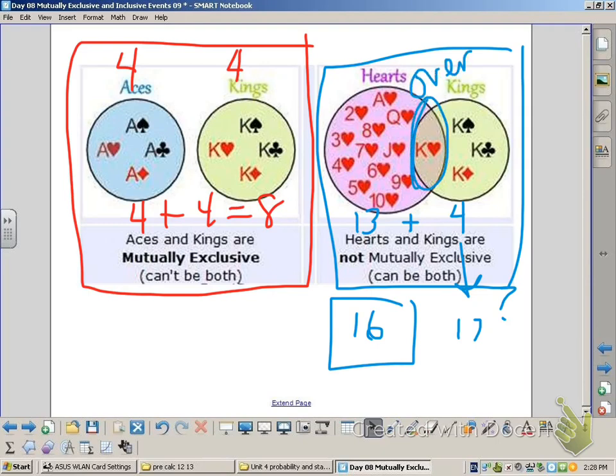We've got this piece in the middle, the king of hearts, where it overlaps. So to take care of that we need to subtract one from our 17 to get an answer of 16. Keep this in mind as we progress through the slides today.